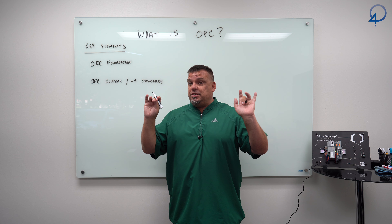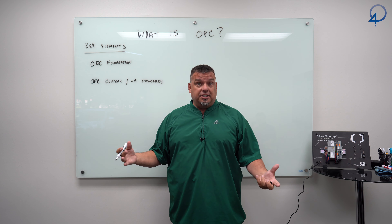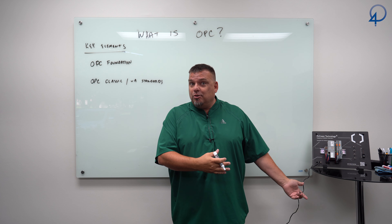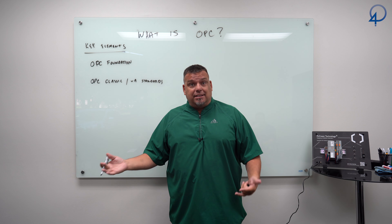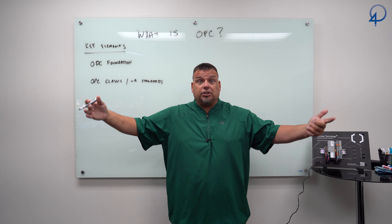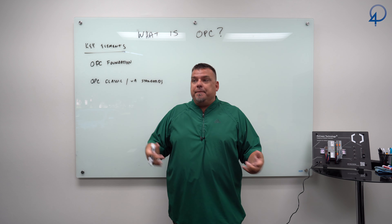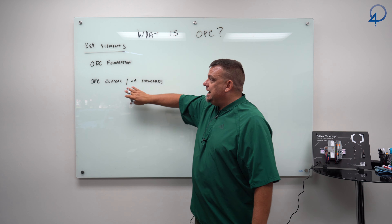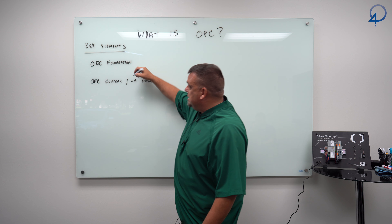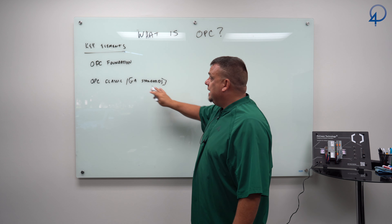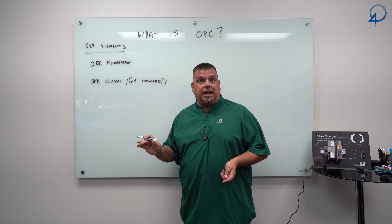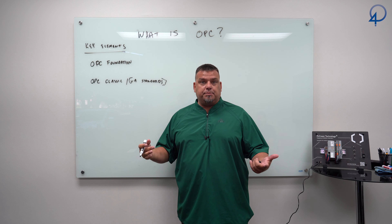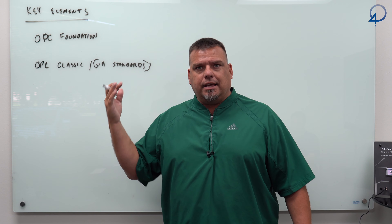Remember when we talk about OPC, we're talking about process control — how do we do this in industry? How do I take stuff from machines and share it? OPC is for machines and industry specifically. The common standard now that nearly all products use is OPC UA, which came out in the early 2000s. That standard was originally 13 parts, then you added OPC part 14, which was PubSub, and now we're at around part 20.